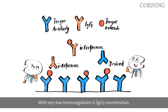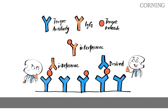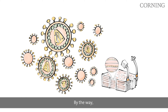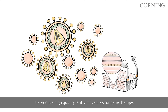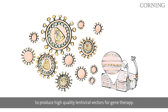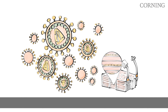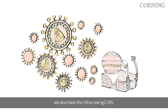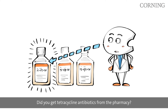On the other hand, if you're going to perform immunoassay procedures, ultra-low IgG FBS is the best choice. With very low immunoglobulin G concentration, it would not interfere with the binding of antigens to target antibodies. You may already use our Corning HYPERStack vessels to produce high-quality lentiviral vectors for gene therapy — don't forget we also have the ultra-low IgG FBS.